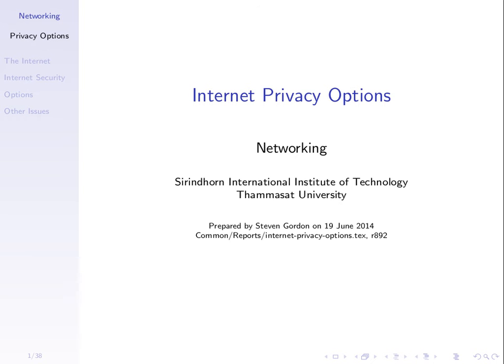We know ways to encrypt our data so someone cannot see the data and keep our data confidential, but we want to look at some other aspects of security, often termed privacy — keeping the patterns of communications confidential. Who is communicating, when, and how often? This set of slides talks about several options for providing privacy on the internet.